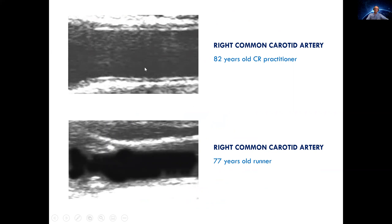Here are echodoppler images acquired while working at Washington University in the US. This is the common carotid artery of an 82-year-old man practicing calorie restriction with optimal nutrition. As you can see, there is no thickening — the arteries are clean. In contrast, this is a 77-year-old runner who was running 50 miles per week. As you can see, there is a lot of thickening, a lot of deposition of atherosclerotic material in the subendothelial space, and here at the bulb of the common carotid artery, you can see a plaque.